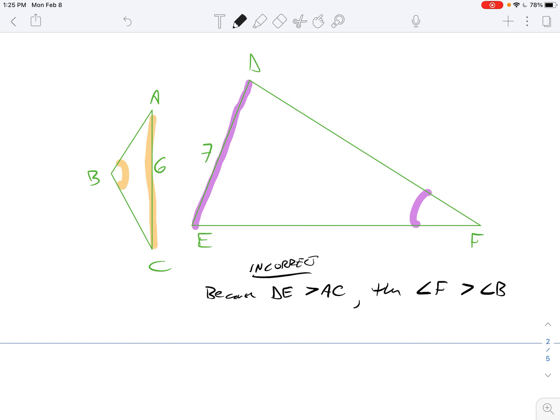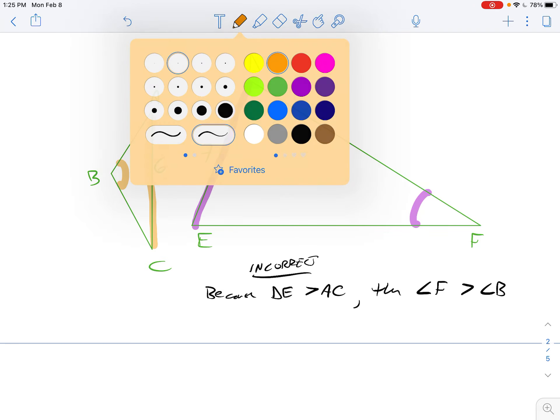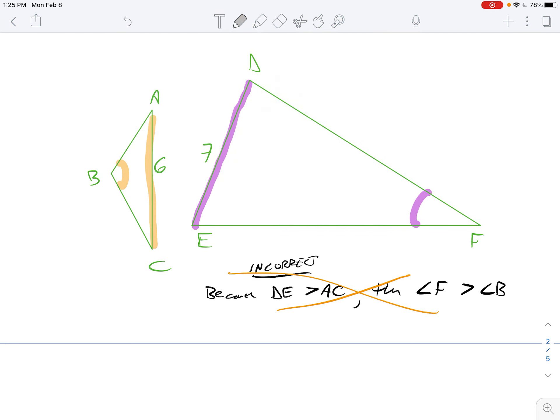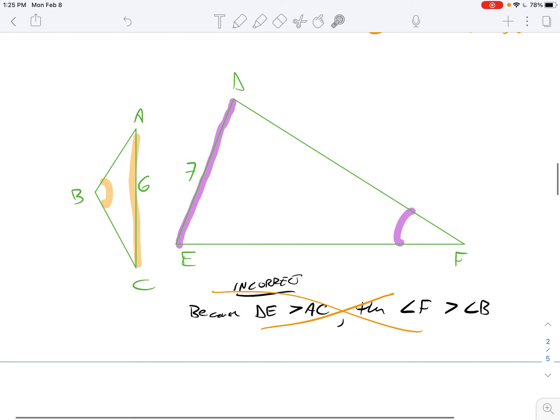But if you look at the picture, that's not true. Angle B has a bigger measure than angle F if we just estimate from the picture. So be really careful about this. You can only use this rule about comparing bigger angles to bigger sides within a single triangle. Once you start comparing between two triangles, it doesn't work.